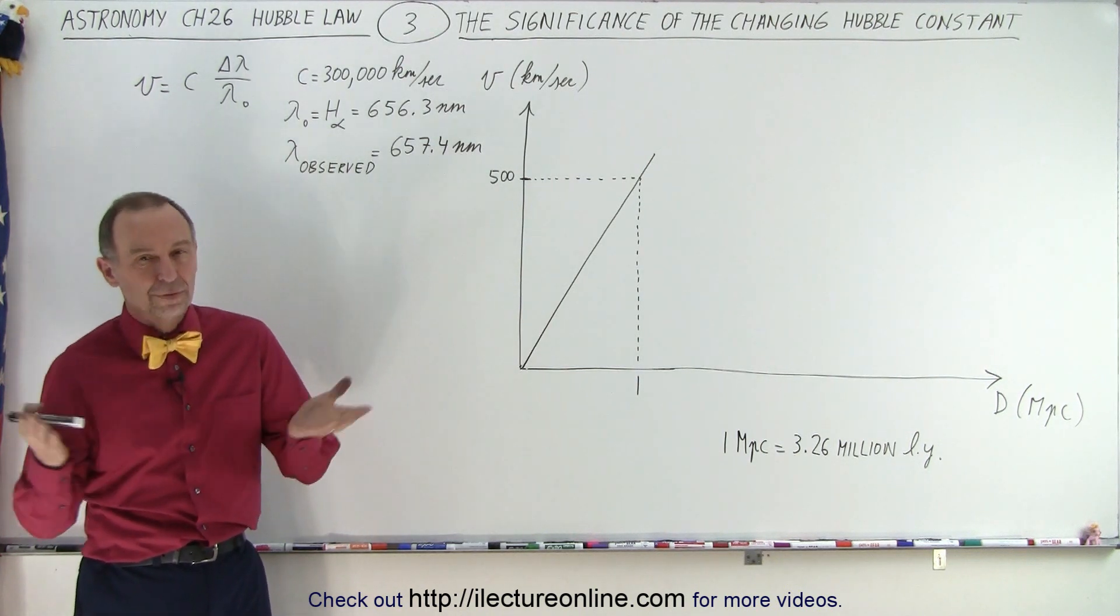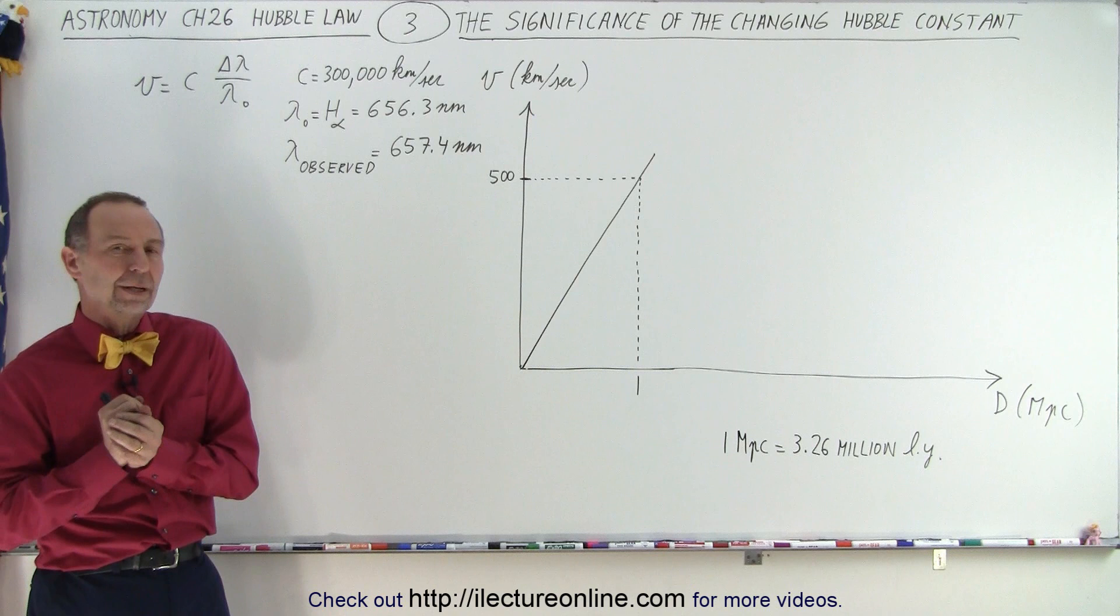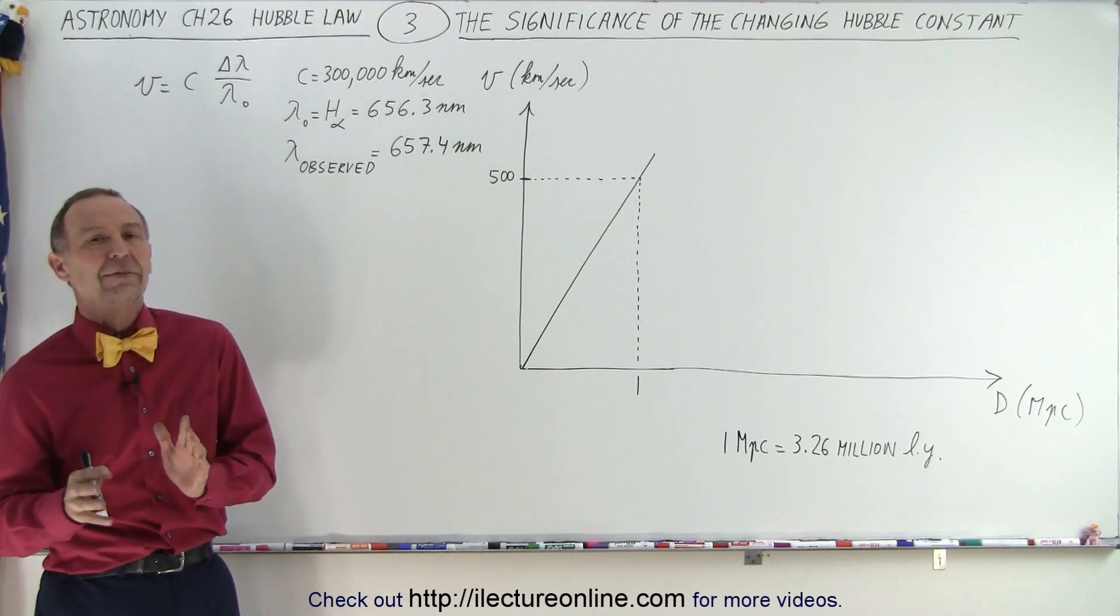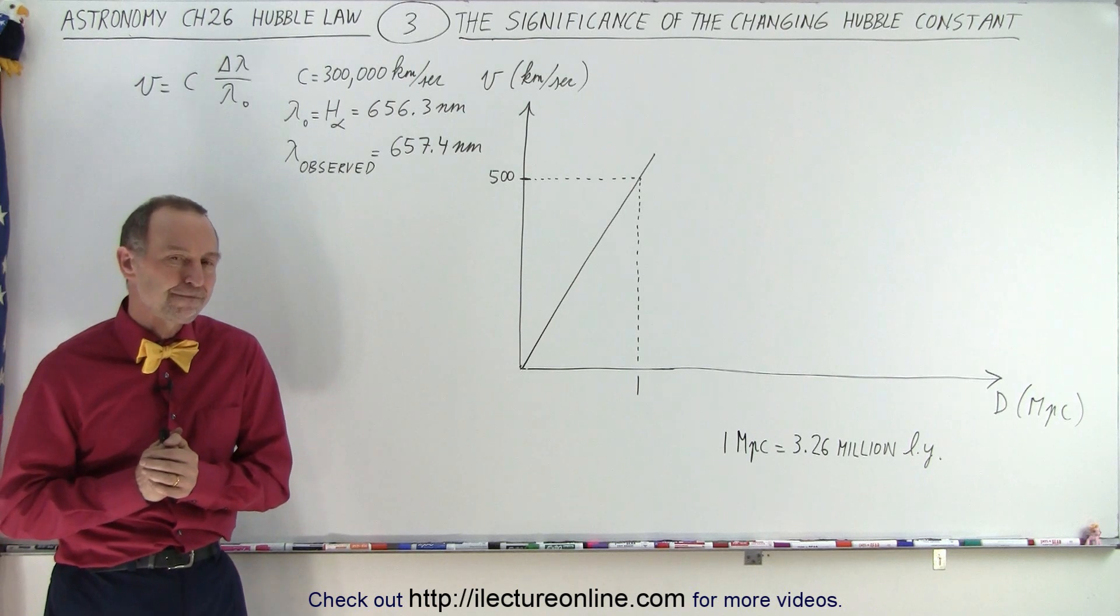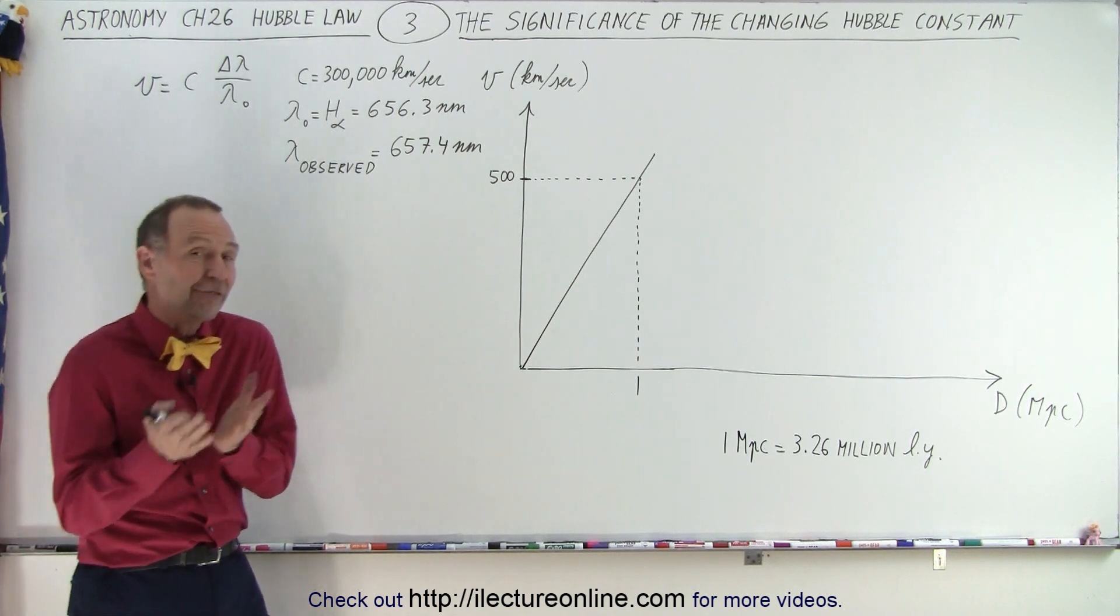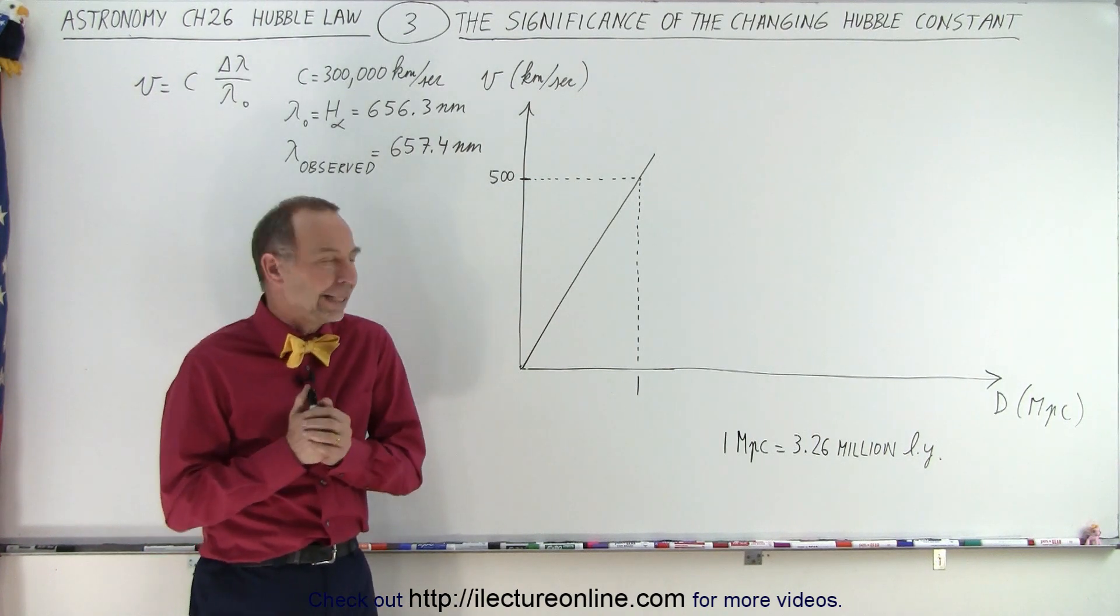Of course over the years we've gotten better and better instruments, better capability and now we've determined that it's somewhere between 67 and 73. So what does it matter? What's the difference? How does it affect things that we look at in astronomy?